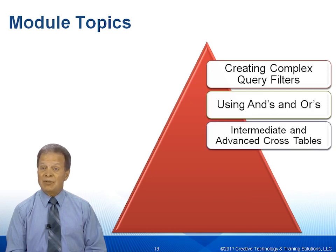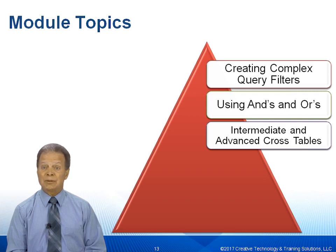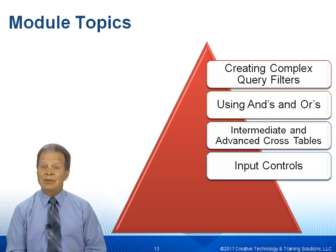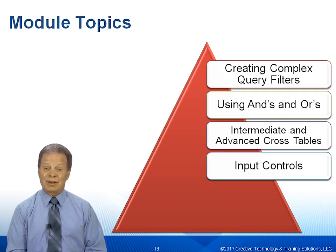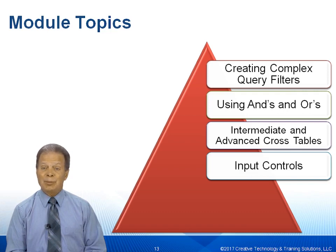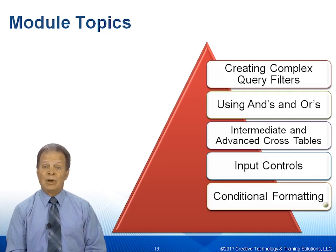We're going to apply formatting to intermediate and advanced cross tables and get into more advanced formatting inherent with cross tables in particular. We're going to introduce input controls — gadgets brought down from the Xcelsius dashboarding product — that allow us to create simple end-user filtering objects like radio buttons, check boxes, and list boxes. A typical end user, with maybe only the view version of WebI, can still do simple filtering and print off their reports. We'll also get into conditional formatting, which is such a major feature of the product.